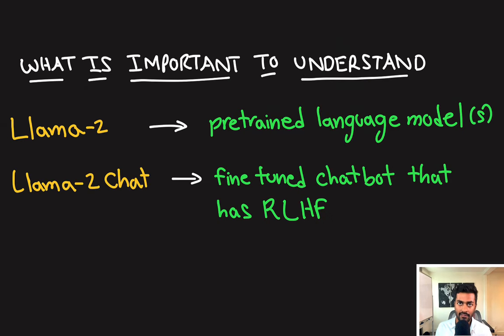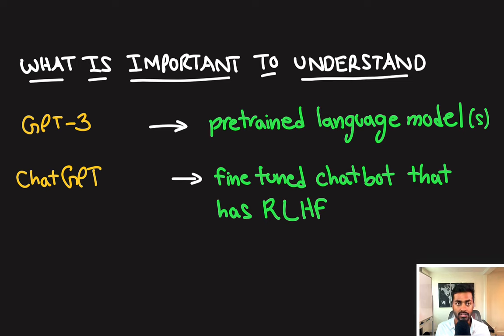What's important to understand first is that Llama2 is a suite of pre-trained language models, while Llama2Chat is a fine-tuned chatbot that uses reinforcement learning through human feedback. And this is analogous to GPT-3, which is a suite of pre-trained language models, and ChatGPT, which is also a fine-tuned chatbot that has reinforcement learning through human feedback. So Llama2 is comparable to GPT-3, and Llama2Chat is comparable to ChatGPT.